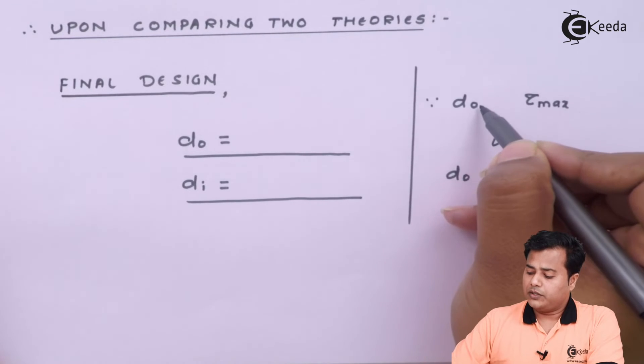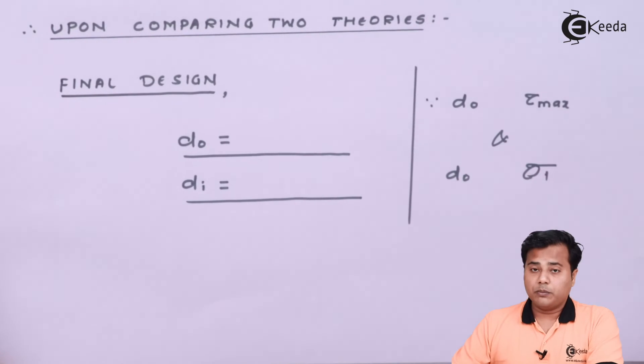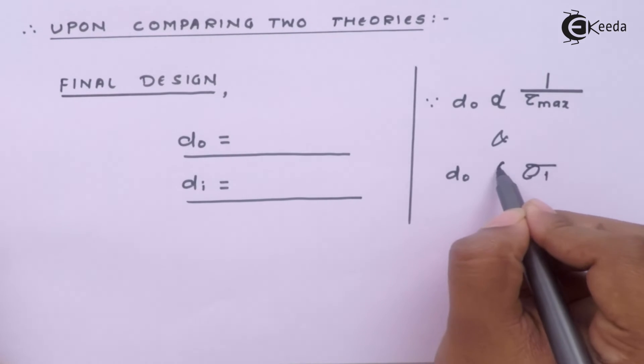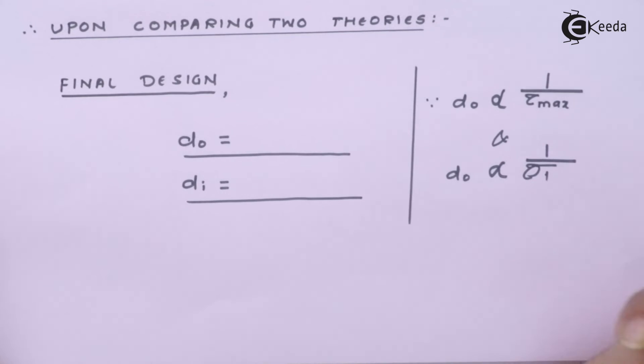We know that the outer diameter is inversely proportional to the maximum shear stress and it is inversely proportional to the maximum theorem.